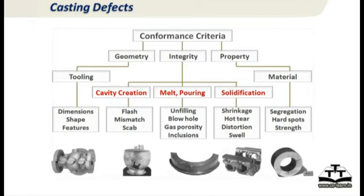Now, conformance criteria. A hundred years ago, if you got the shape right, like those statues, it was good enough. Today, internal integrity — no blowholes, no cracks, no inclusions — has become very important. People are now also demanding properties; your test bar alone is no longer sufficient. So there are three conformance criteria: shape, integrity, and properties, in that order of importance. Geometry is primarily linked to tooling design — getting dimensions, shapes, and features right using various allowances.